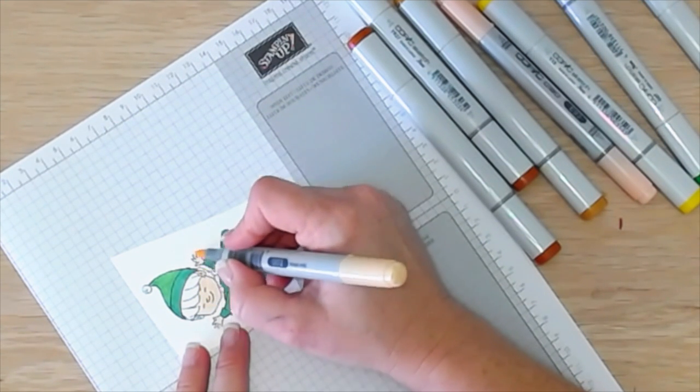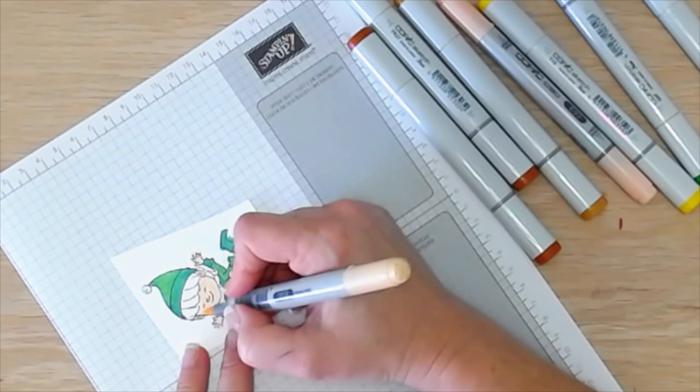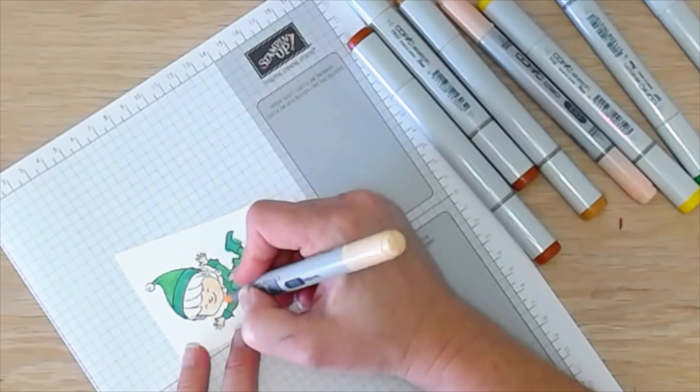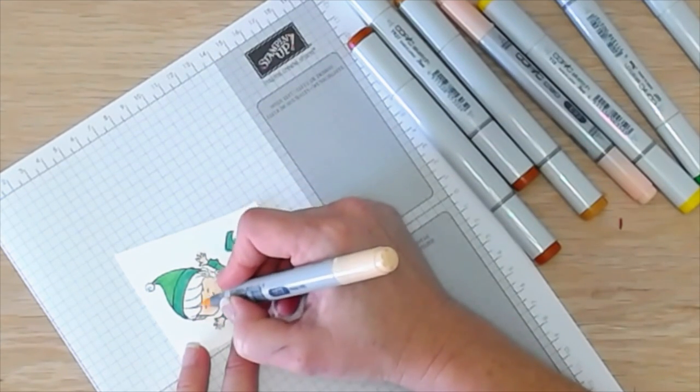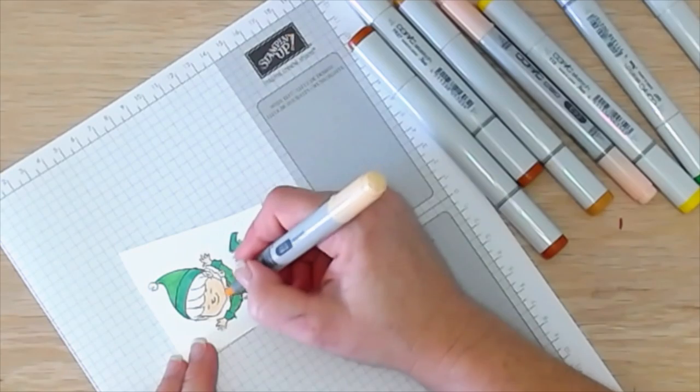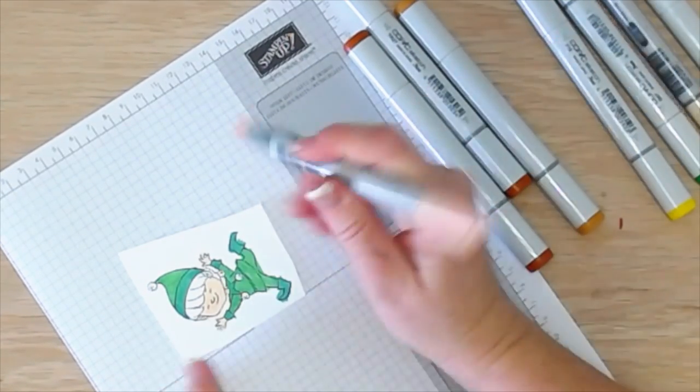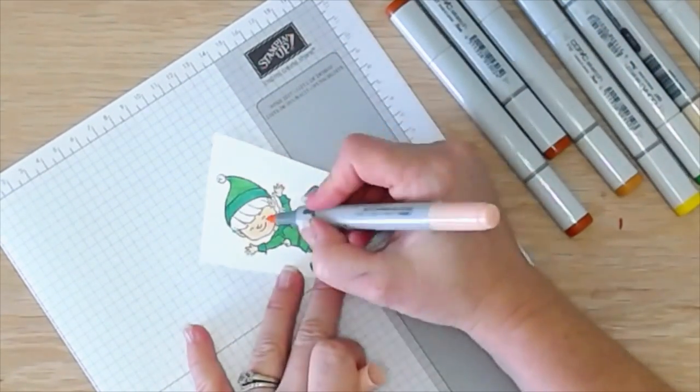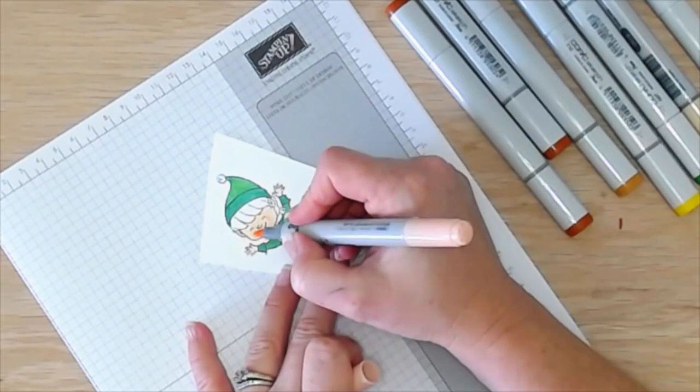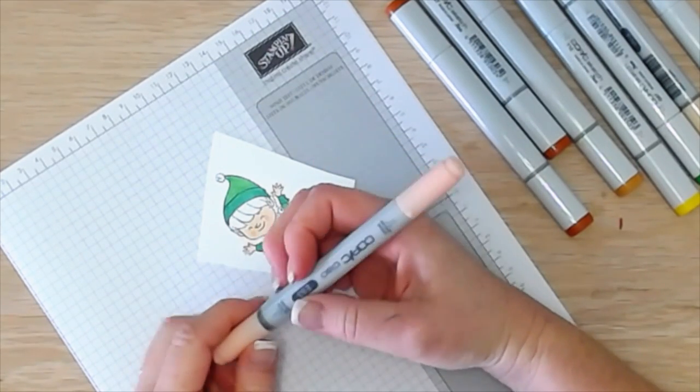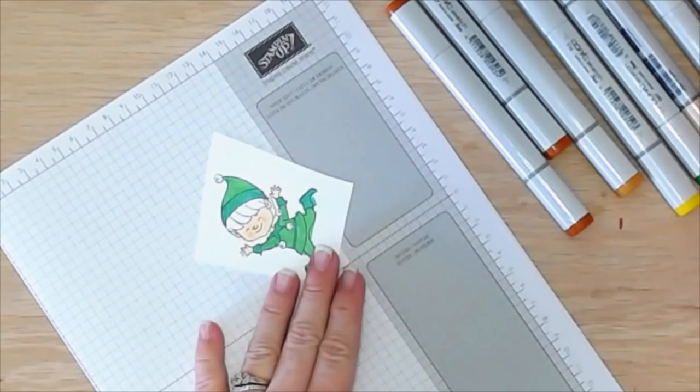Then I'm going back over it again, just to kind of darken it up. That's something that's cool that I learned about Copics is the more you layer, the darker it gets. So that's kind of cool. And I really didn't know that. And then of course, I feel like he needs rosy cheeks. So I'm just going to add some E93 for his cheeks.